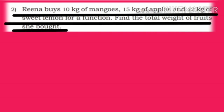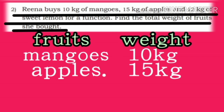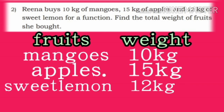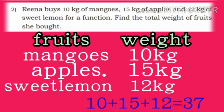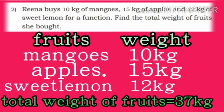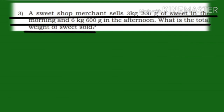Second problem: Rina buys 10 kg of mangoes, 15 kg of apples, and 12 kg of sweet lemon for a function. Find the total weight of fruits. Add the weight of fruits: mangoes 10 kg plus apples 15 kg plus sweet lemons 12 kg. 10 plus 15 plus 12 is 37 kg. So total weight of fruits is 37 kg.